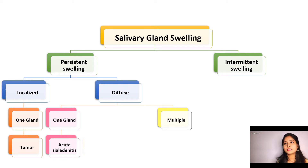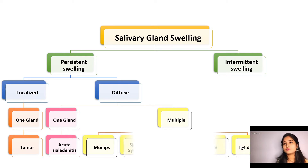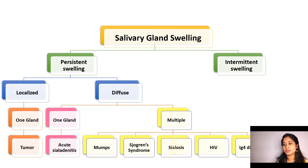If it involves multiple glands, there are a lot of differential diagnoses which we have to consider, starting from mumps, Sjogren's syndrome, sialosis, HIV, and IgG4 disease.